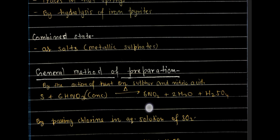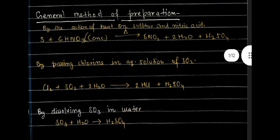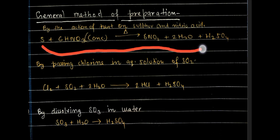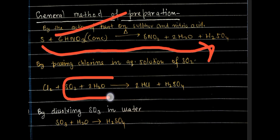There are four general methods for the preparation of sulfuric acid. First, as studied in nitric acid, nitric acid oxidizes sulfur into sulfuric acid. Second, by passing chlorine into an aqueous solution of sulfur dioxide — if you pass chlorine gas into the mixture of SO₂ and water, you will get sulfuric acid.